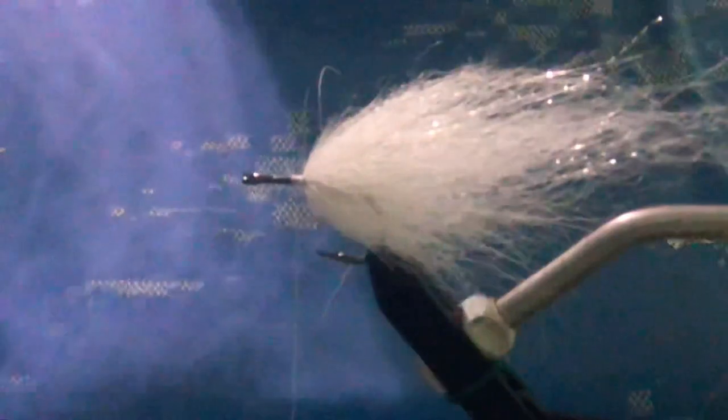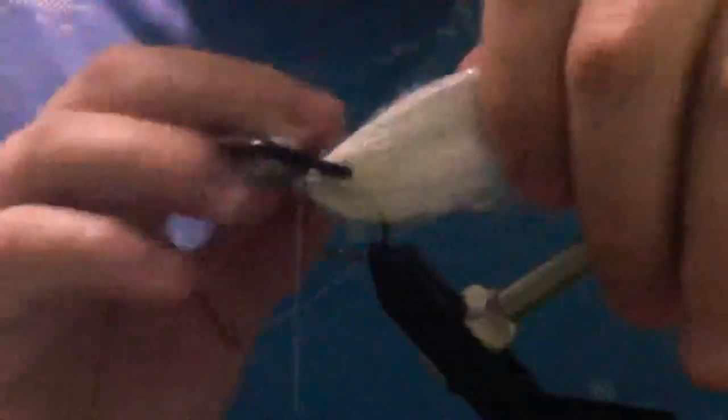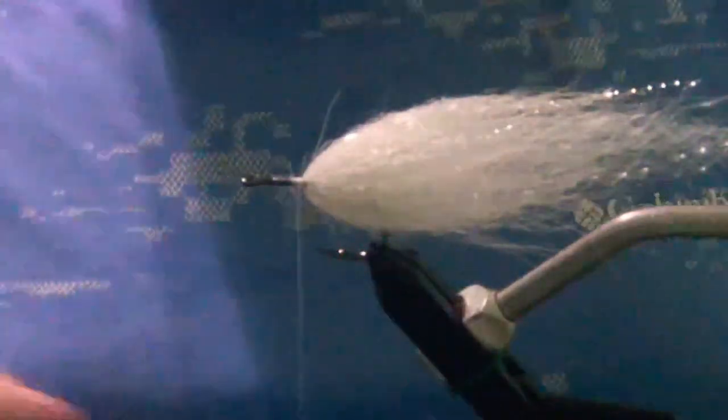And then I just like to come back with a little comb, and that'll just help pull any extra fibers out that you can. You can already see we're starting to get that little teardrop baitfish shape going in there.